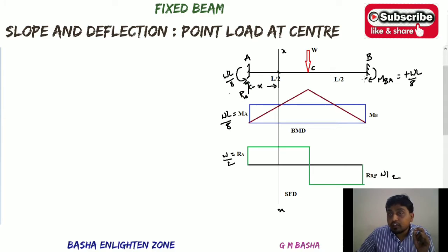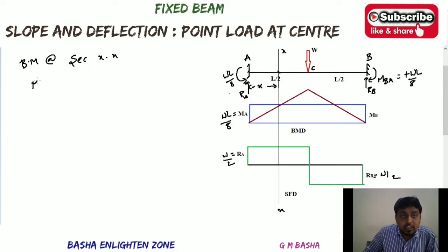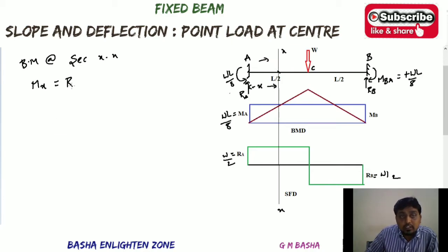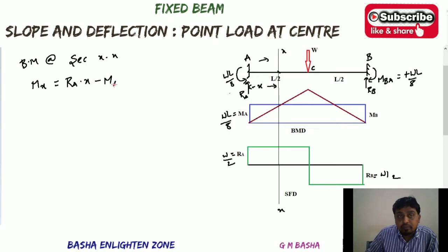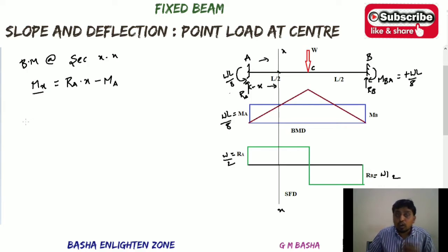The bending moment at section XX: RA is acting clockwise up to section XX, giving RA × X. The anti-clockwise moment MA also acts, giving minus MA. So the bending moment at X equals RA × X minus MA, which is (W/2)·X minus WL/8.